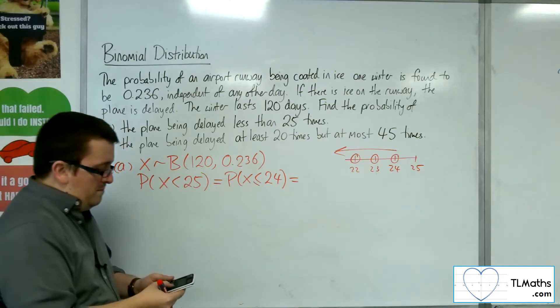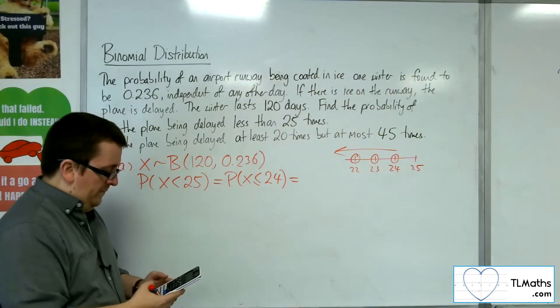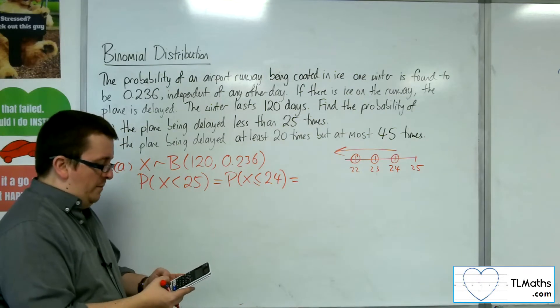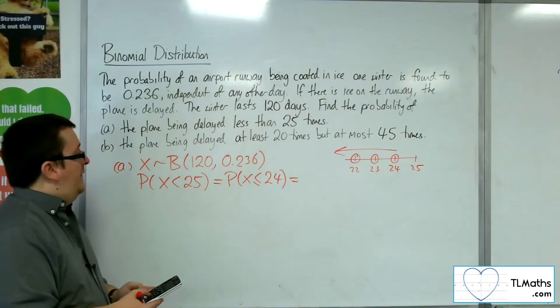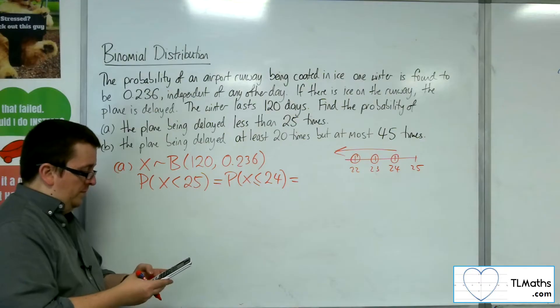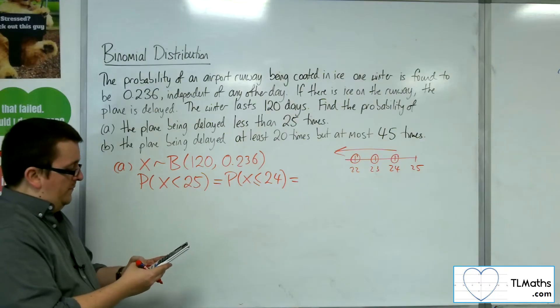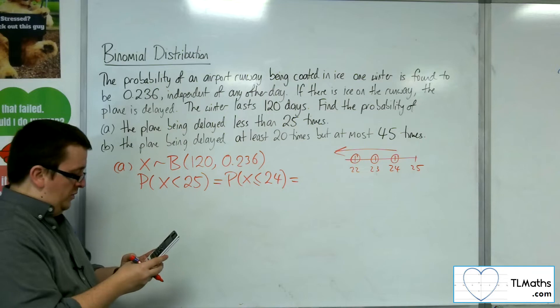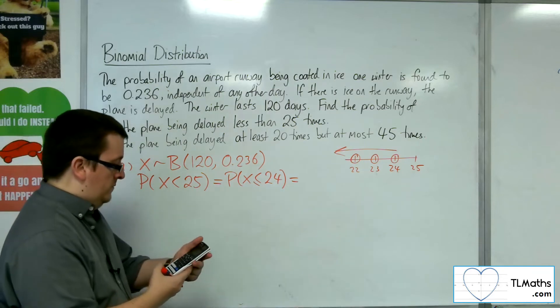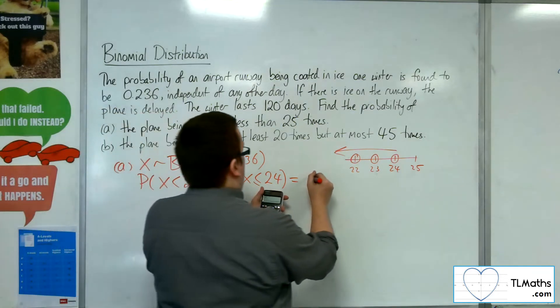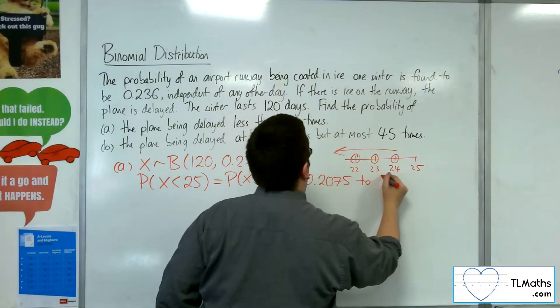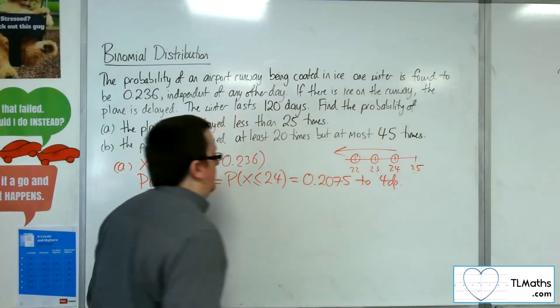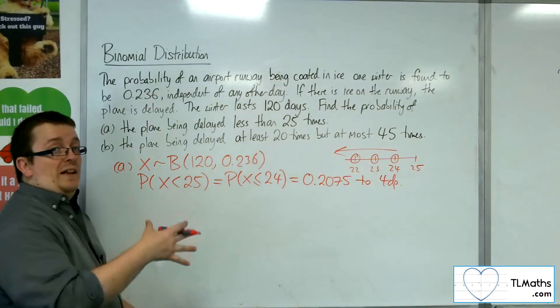So I'm going to go to menu, number 7, and then scroll down to binomial CD. We want to go straight into variable, and the X value is 24, the N is 120, and the probability is 0.236. And we get 0.2075 to 4 decimal places. Okay, so that's A.